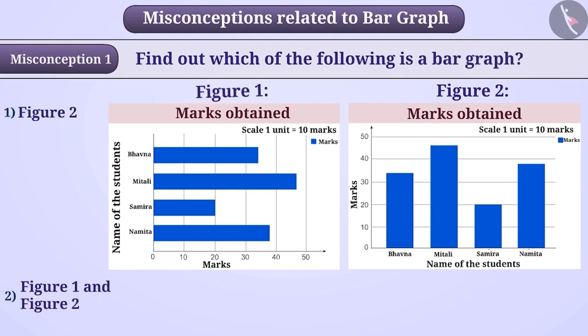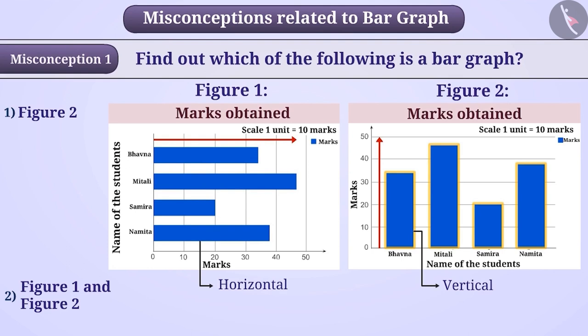Here, the bars drawn in figure 1 are horizontal and the bars drawn in figure 2 are vertical. Some students believe that a bar graph can only be drawn vertically, not horizontally.